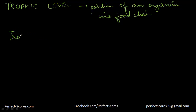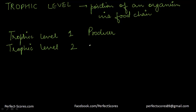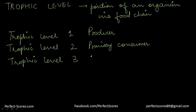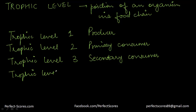The different trophic levels in a community are as follows: Trophic level 1 is always taken by the producer. Trophic level 2 is taken by a consumer called the primary consumer. Trophic level 3 is taken by a consumer called the secondary consumer. Finally, trophic level 4 is taken by another consumer, usually a saprotroph, and we call it the tertiary consumer.